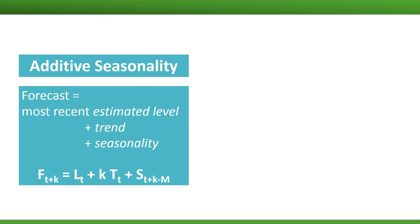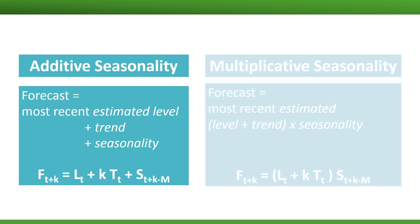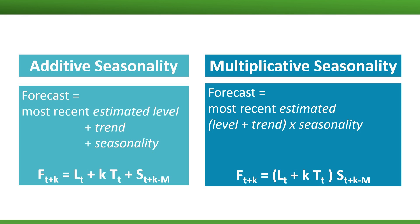For additive seasonality, we use addition to add the seasonal components. This means that for different seasons, we get forecasts that are different by a fixed amount. In contrast, in multiplicative seasonality, we multiply by the seasonal component. We can choose either of these equations for forecasting our series. Notice how these two equations are for an additive trend — we're adding k times T sub t. We can adjust these to capture a multiplicative trend. See the book Practical Time Series Forecasting for further details.